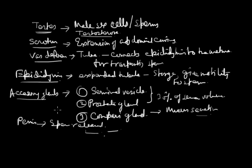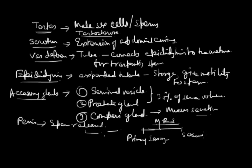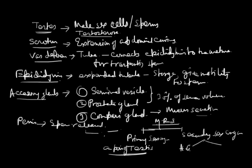This is all about the male reproductive system of humans. The male reproductive system has two basic divisions: primary sex organs and secondary sex organs. The primary sex organ is made up of a pair of testes, and the secondary sex organs include the accessory glands and the penis.